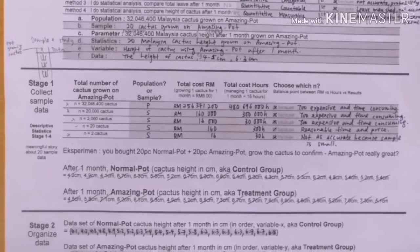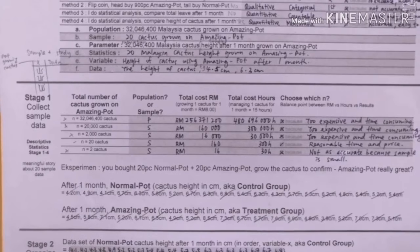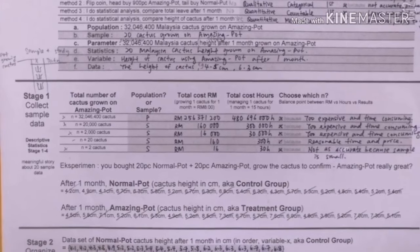Moving on to stage one where you see the total number of cactus grown on amazing pot. From here we need to choose the most suitable sample to be used. We choose sample with 20 cactus because the total cost in RM is 160, the total cost in hours is 300 hours. Therefore, it is reasonable in time and price.